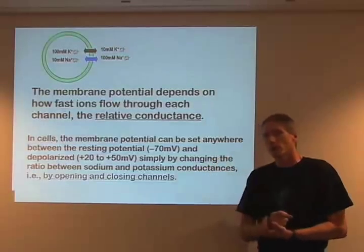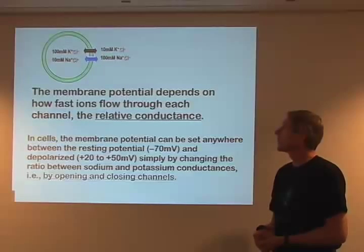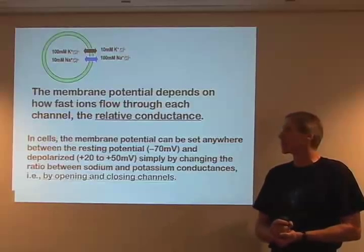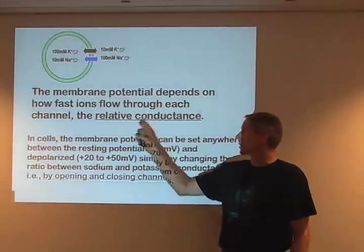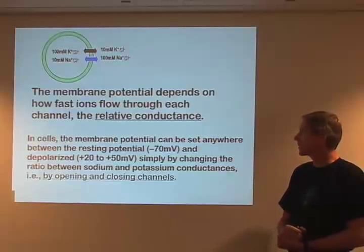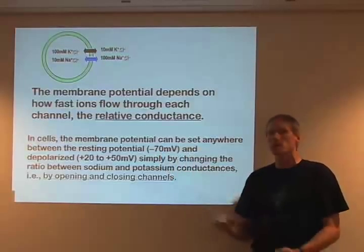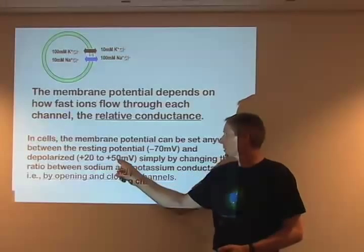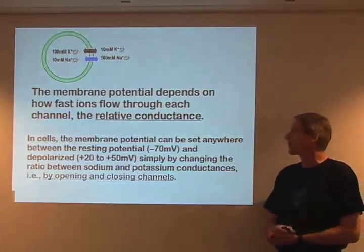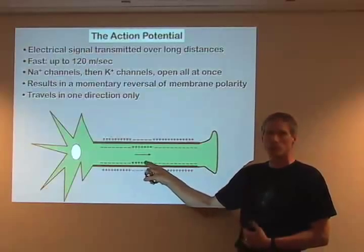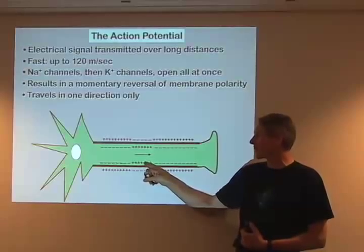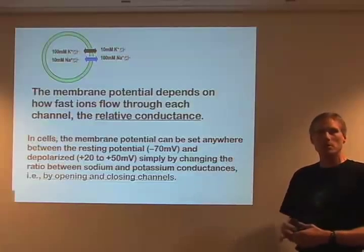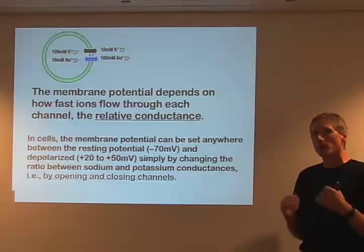As discussed in the electrochemical gradient lecture, the membrane potential can be set by opening and closing channels. It's dictated by the relative conductance — whether channels are open or not. The resting potential in real cells is about minus 70 millivolts. When they're depolarized, they switch to plus 20 to plus 50 millivolts in that little region of the nerve cell. All of this occurs just by opening and closing sodium and potassium channels.